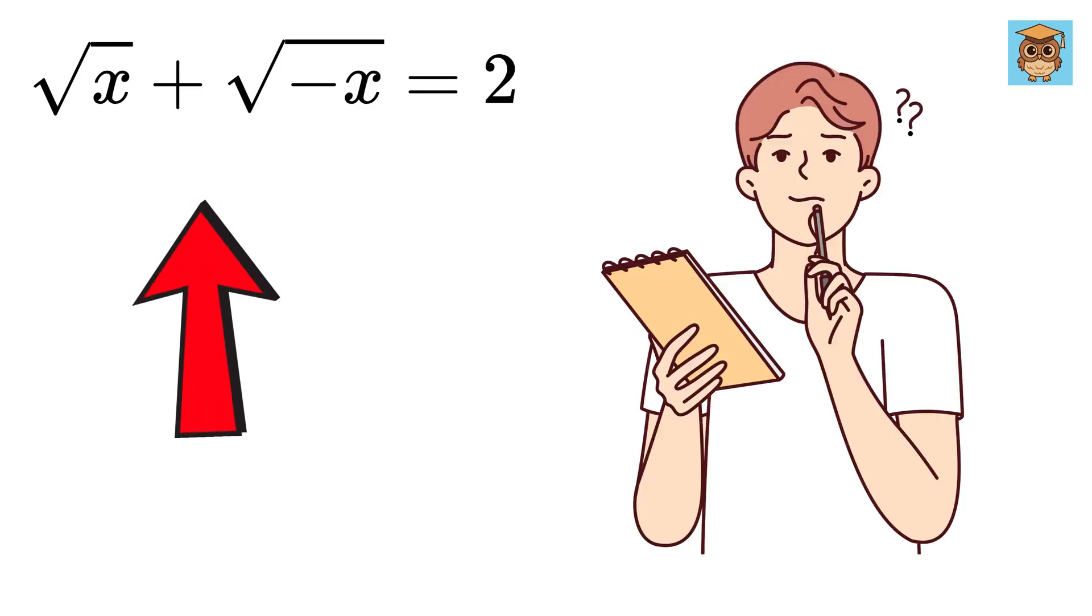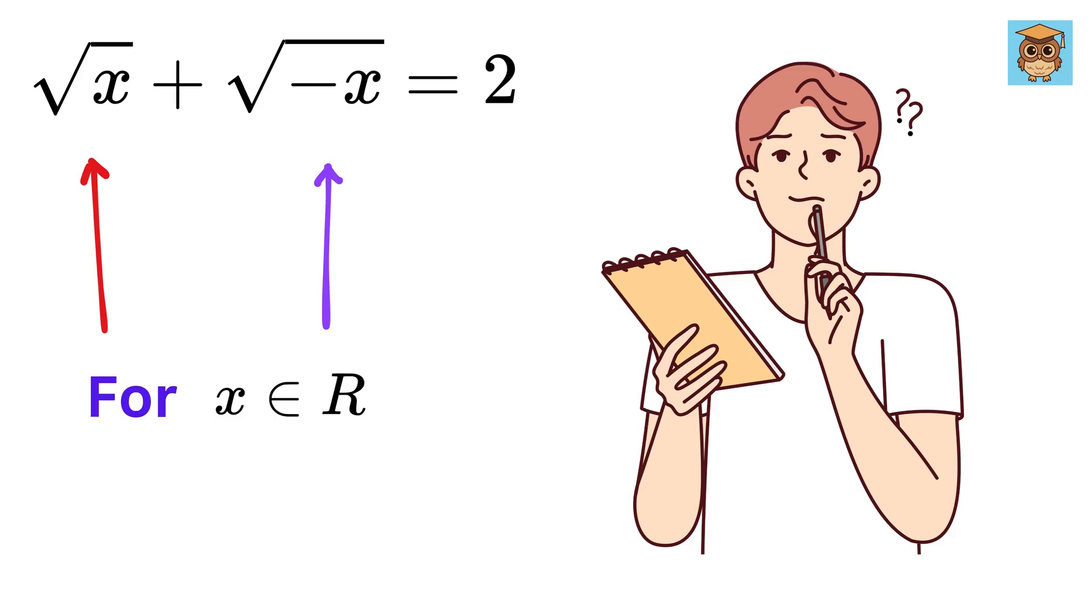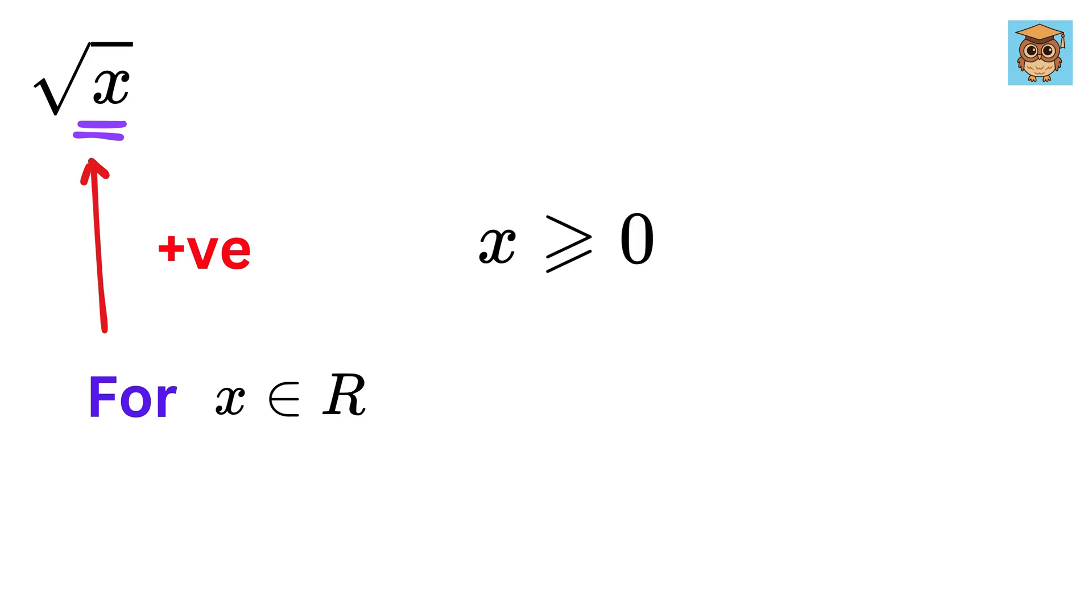What's the first thing that comes to your mind? How can we find a number whose both the positive and the negative part can lie inside a square root? Because if we need the real solution for x, the value inside this square root must be positive. So x must be greater than or equal to 0. But at the same time, negative x must also be greater than or equal to 0, which means x must be less than or equal to 0.